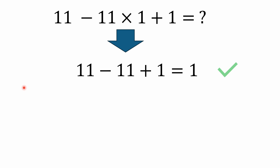Some people will actually do this incorrectly and still get the same answer. They may be working left to right and just go: 11 minus 11 is 0, 0 times 1 is 0, 0 plus 1 is 1. They're getting the right answer, but they're actually solving it incorrectly.